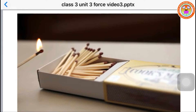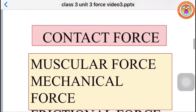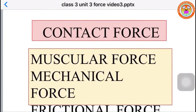There are three types of contact force. They are muscular force, mechanical force, and frictional force. The force applied by using the parts of our body is called muscular force. The force applied by a machine is called mechanical force. Friction is a force that acts between two surfaces in contact or when they slide over one another.